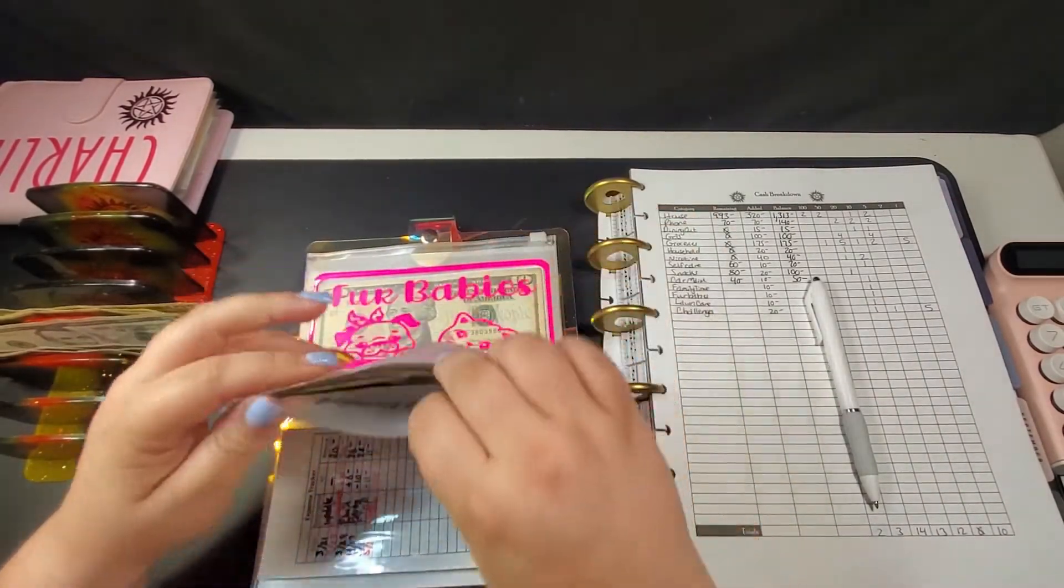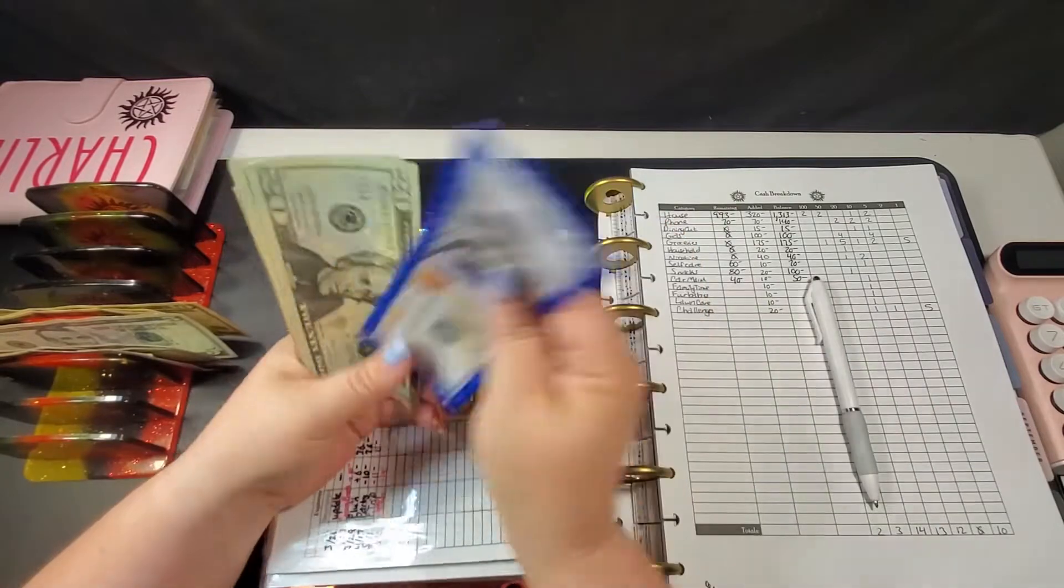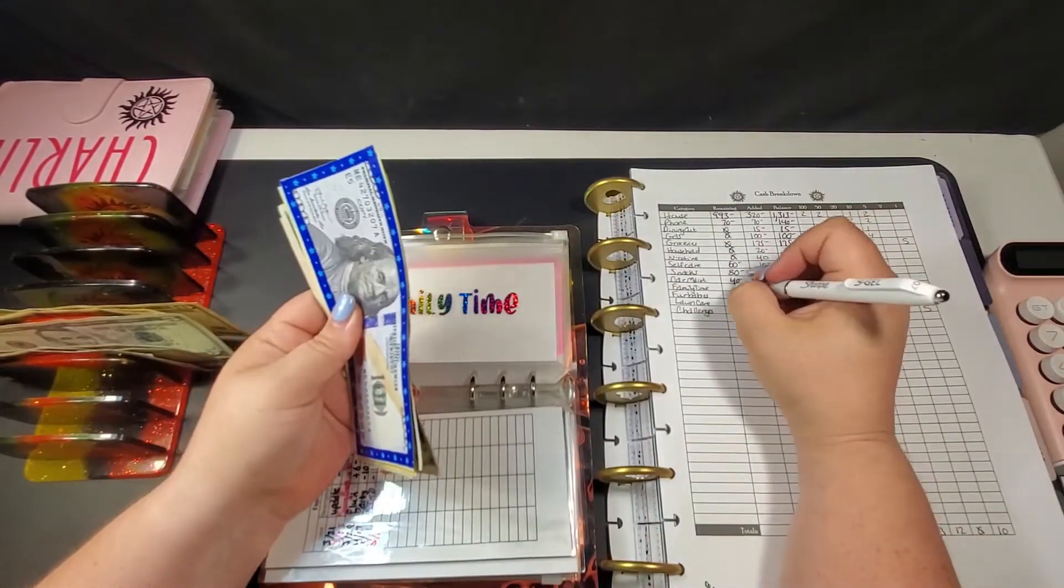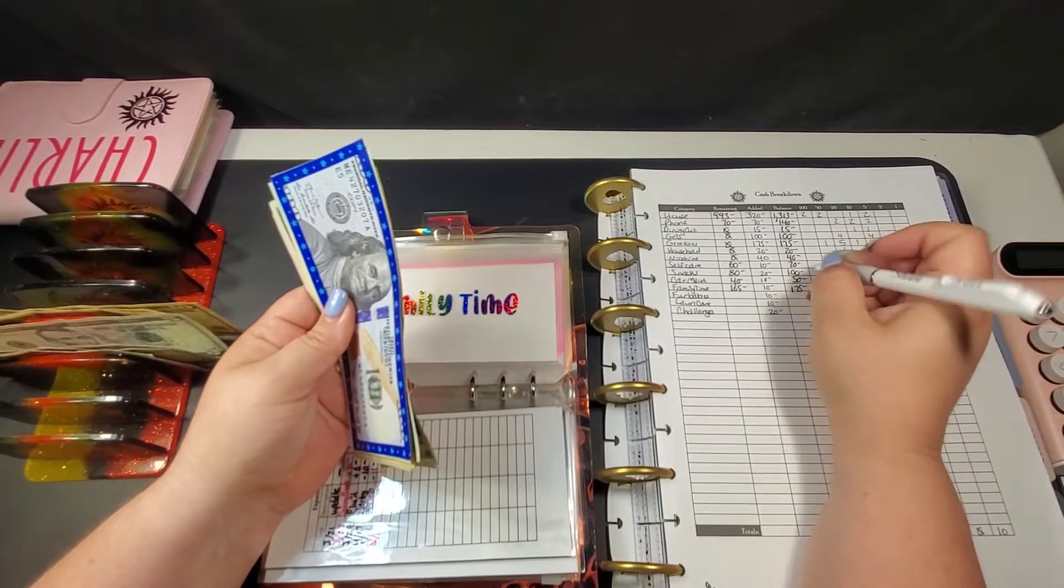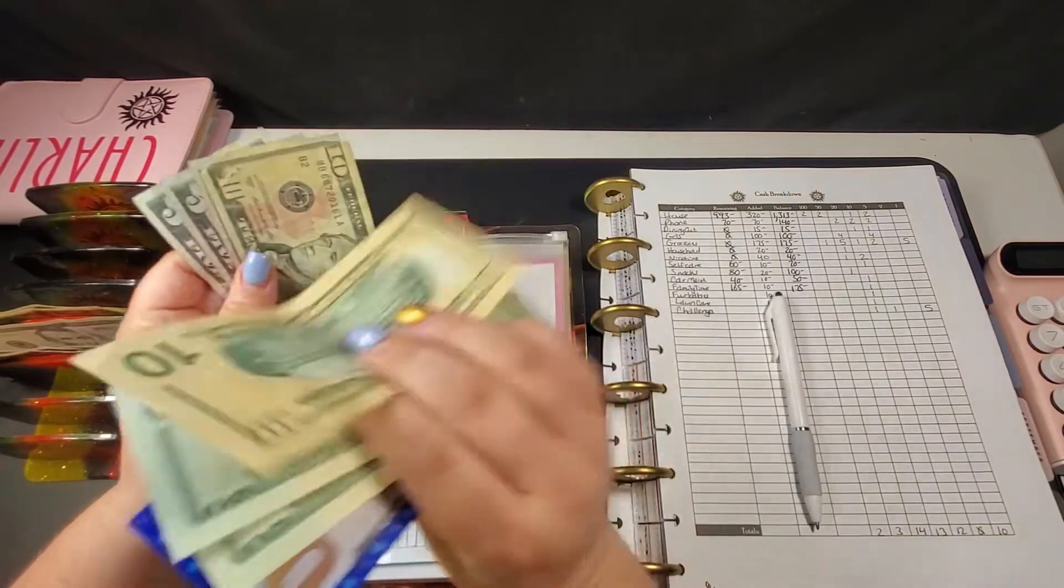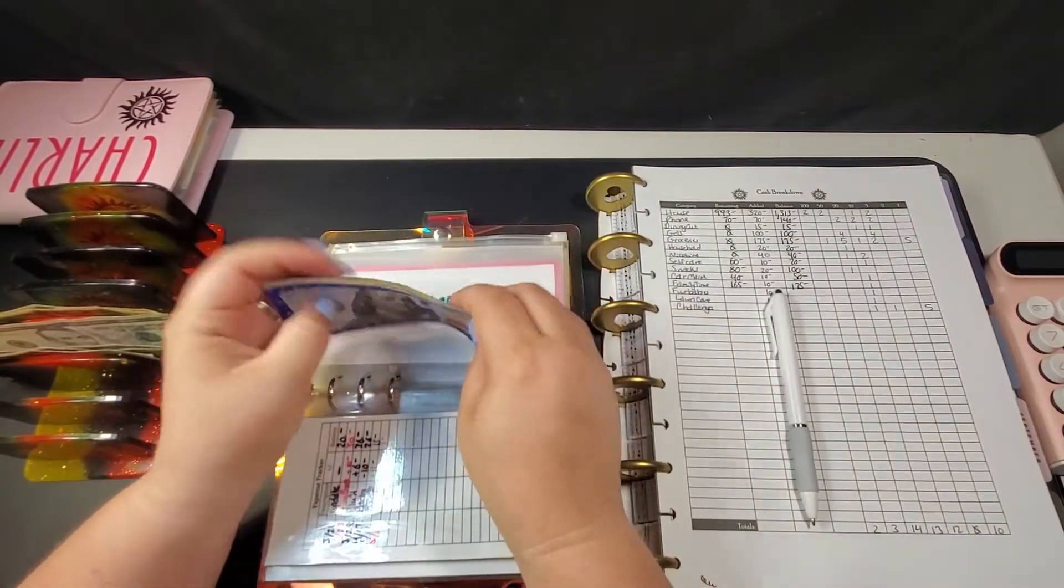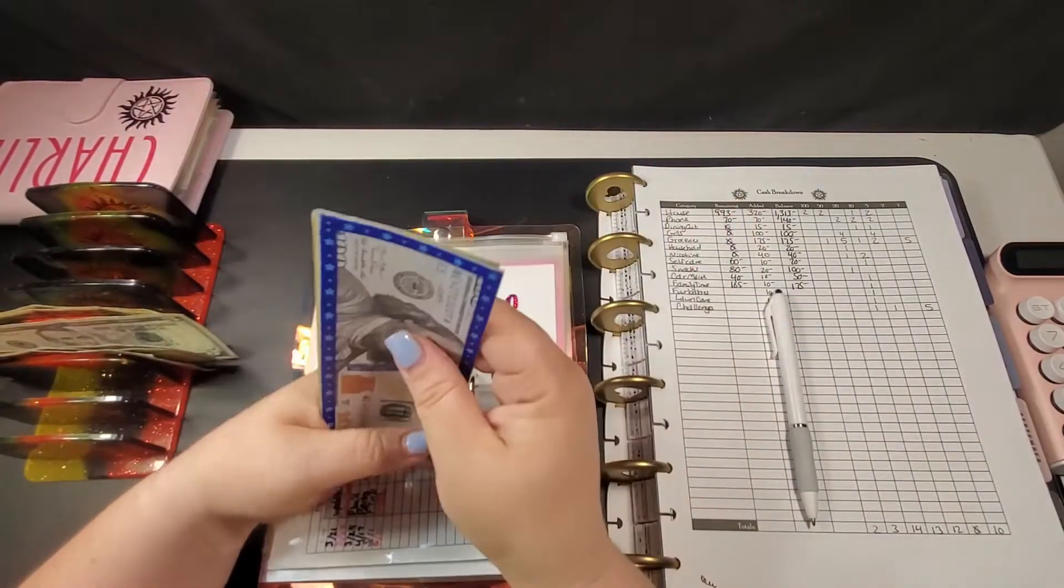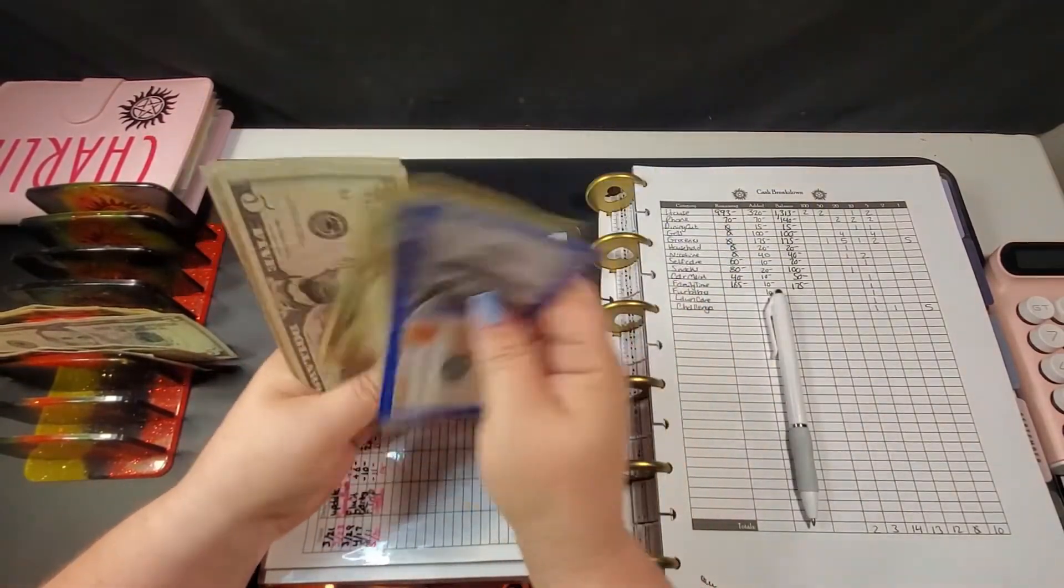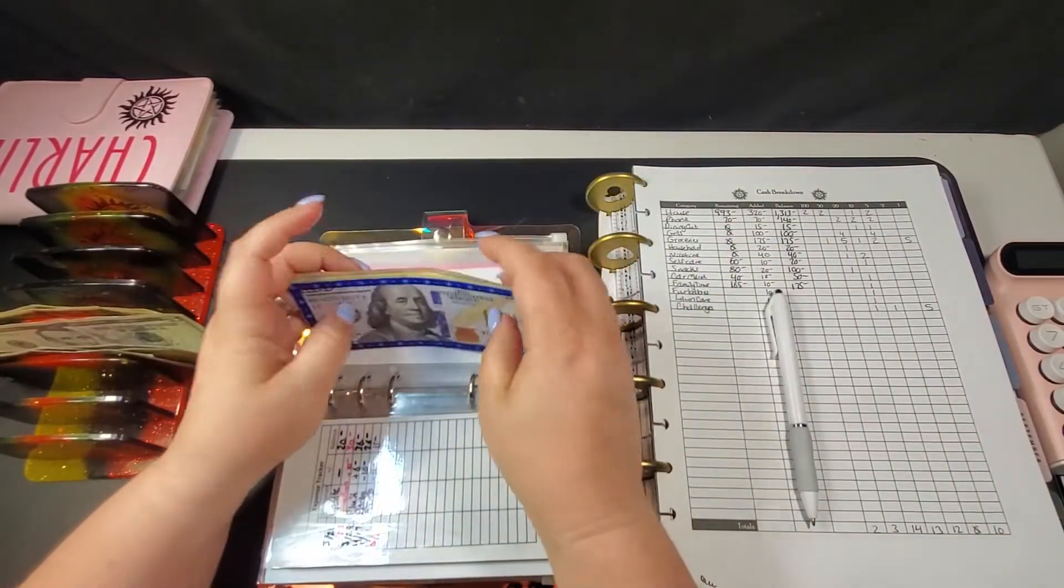Family time currently has $165. It'll be getting $10 today, which will give us $175. But yeah, the yard sale went okay. By the time my daughters got everything they wanted and all of that, I didn't make as much as I wanted to. [Counts] But on the positive side, nothing had to come back home with me, so that's a good thing.